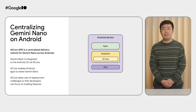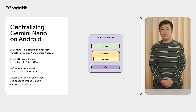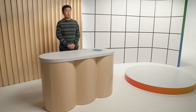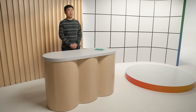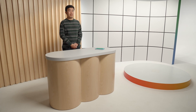AI Core is an Android system service designed to streamline your use of foundation models. It tackles the challenges of deploying large GenAI models by centralizing runtime, delivery, and critical safety components. We built AI Core because GenAI models, while powerful, are huge and performance hungry, making them impractical to bundle within individual apps. By providing these models as a shared system resource, AI Core lets you leverage the power of Gemini Nano without deployment headaches.